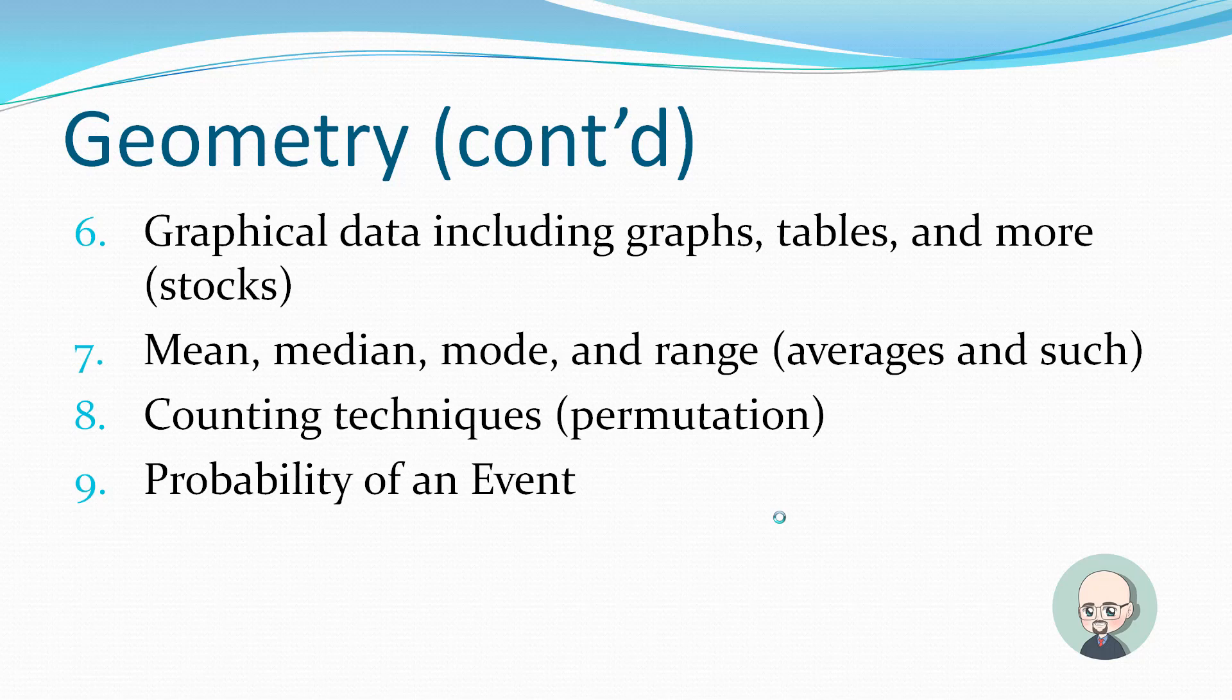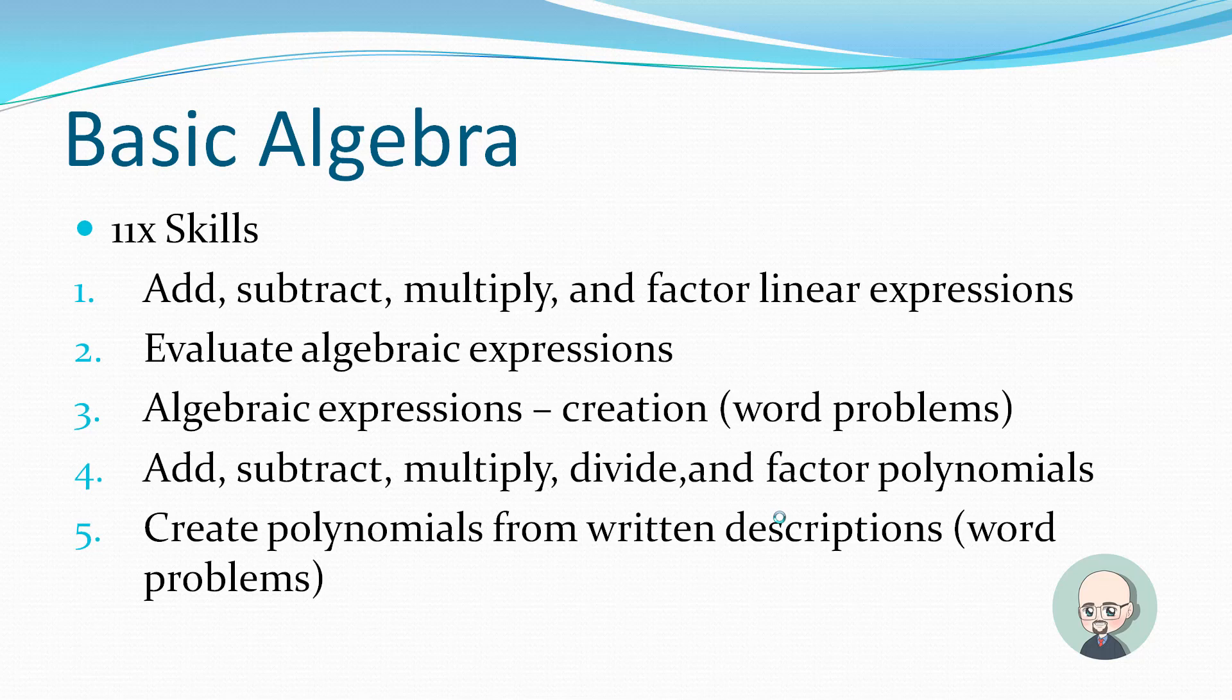Graphical data involving graphs, tables, and more. Things like a stock chart. And like I said, with graphical data, a lot of times they can involve different things. So this graph would be, these are the types of graphs that involve geometry. And again, geometry or shapes. The mean, median, mode, and range. These are things with averages and such. Counting techniques. Probability of an event. Probability is the chance something is going to happen. Counting techniques. We'll get into it a little later. It means something a little different in math than it does in real life. But it has to do with, it overlaps somewhat with probability.